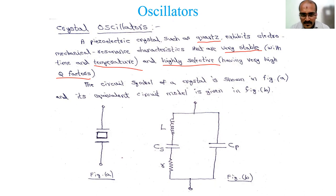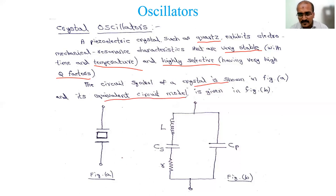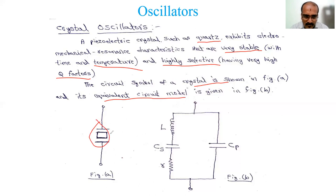The circuit symbol of a crystal is shown in figure A. Just as we learned the symbol and equivalent circuit for BJT and FET, we now need the equivalent circuit for the crystal. The symbol shows walls on both sides like a capacitor, with a thick rectangular shape in between denoting the crystal. Sometimes we write 'crystal' alongside it. The crystal exhibits electromechanical resonance characteristics.